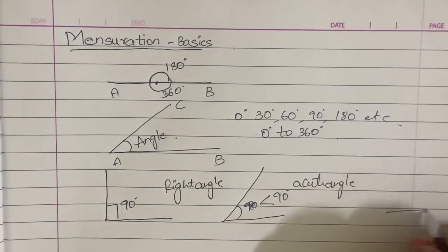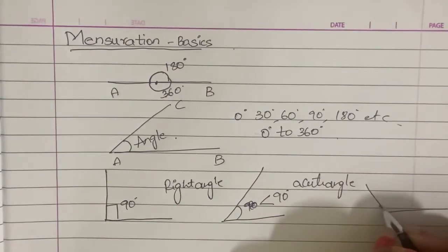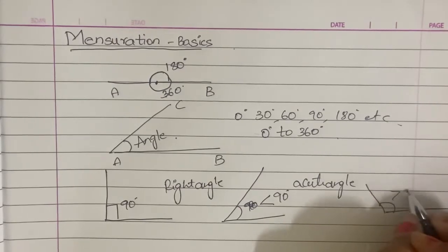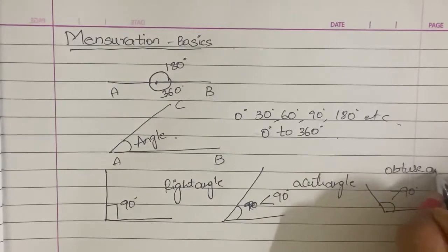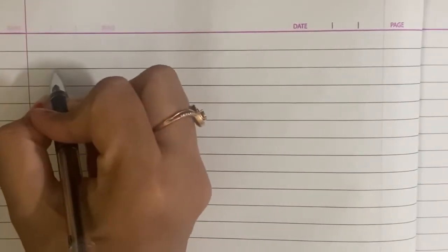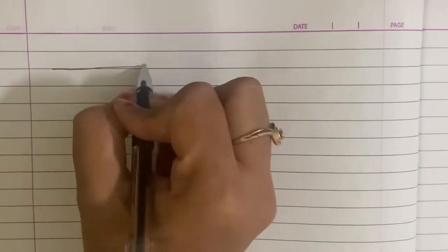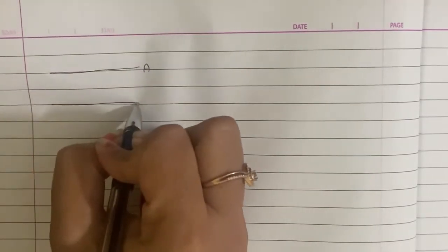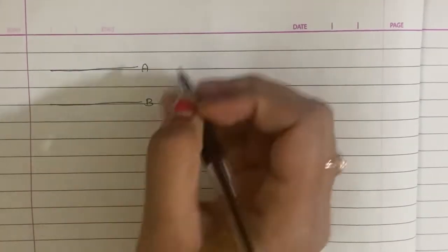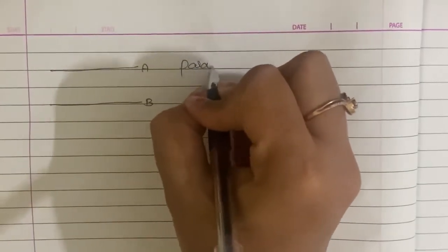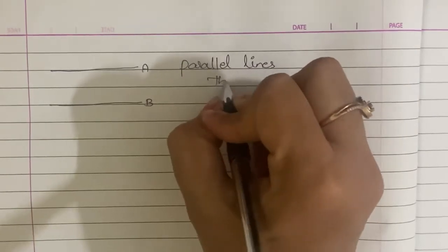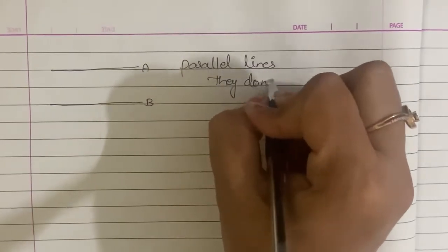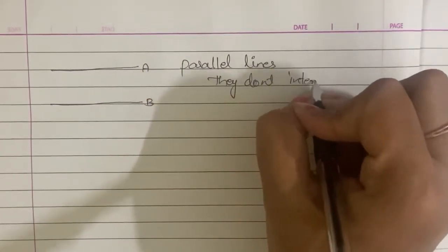Here there are two angles. Line A and Line B are parallel lines. Parallel lines do not intersect at any point.